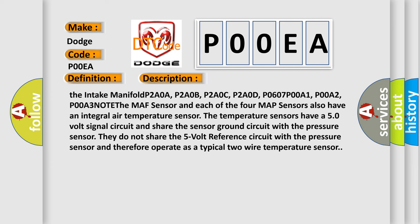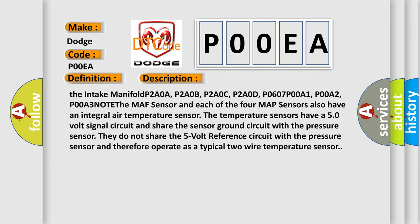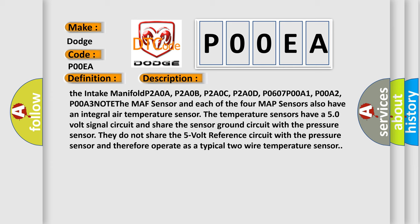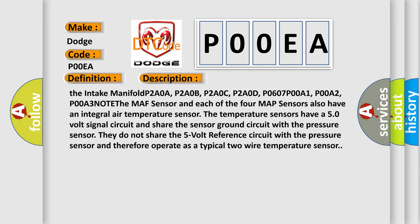Note: the MAP sensor and each of the four MAP sensors also have an integral air temperature sensor. The temperature sensors have a 5.0 volt signal circuit and share the sensor ground circuit with the pressure sensor. They do not share the 5 volt reference circuit with the pressure sensor and therefore operate as a typical 2-wire temperature sensor.